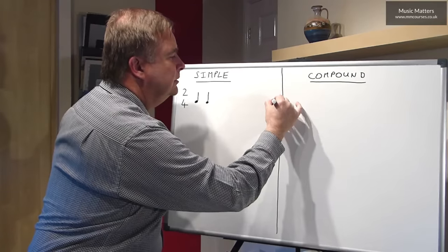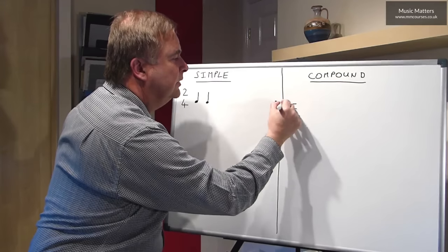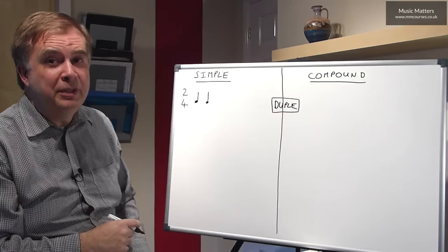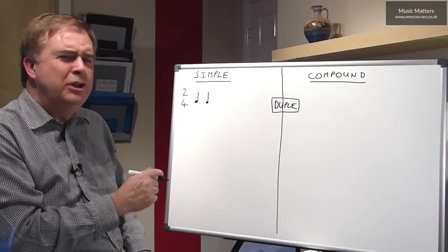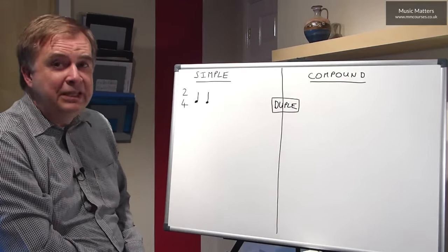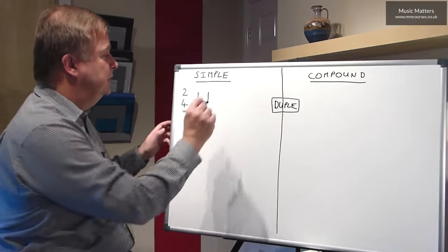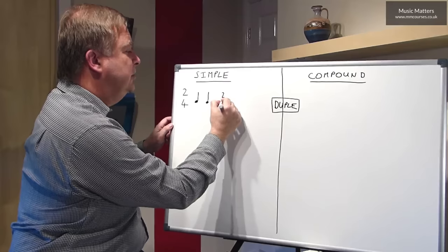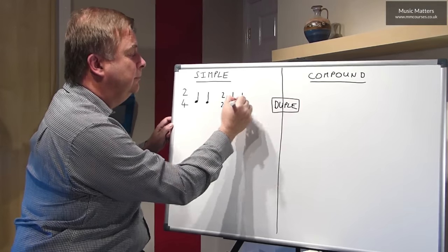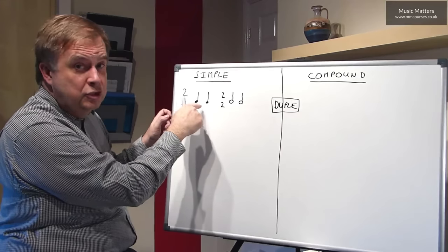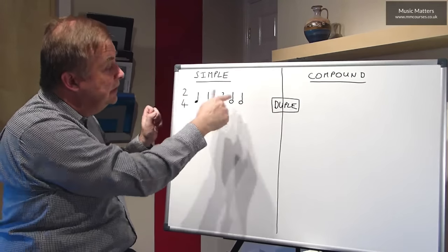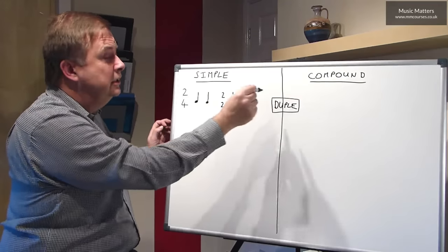And this is called duple time. The reason it's called duple is simply because there are two beats in a bar. Whenever you have two beats in a bar, it's duple time. So you might be able to think of other examples of simple duple time, because basically all it means is it's any time signature that has two at the top. Here's another example: two-two. Two-two means that there are two minim beats in a bar. So the lower numbers change — here I have crotchet beats and here I have minim beats — but the upper number is the same. It's two. Two crotchet beats, two minim beats. So they're both simple times with two beats in a bar.